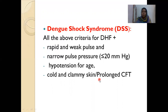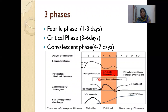There is another terminology called expanded dengue syndrome — dengue involving other organs like CNS, kidney, liver, heart, lung, etc. This tends to have a more protracted course. It can be mild or severe organ involvement and may be seen not only in severe dengue but also in dengue fever. All dengue illness passes through three phases: febrile phase (1 to 3 days), critical phase (3 to 6 days), and convalescent phase (4 to 7 days). The complications vary by phase, so identifying which phase the patient is in guides management.